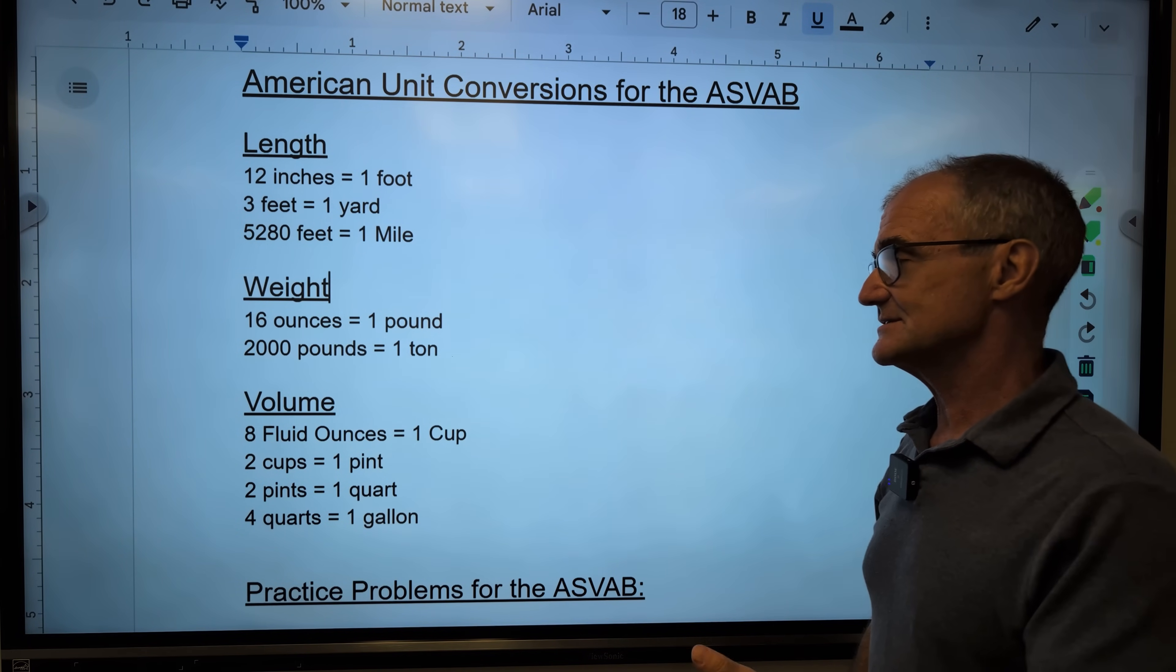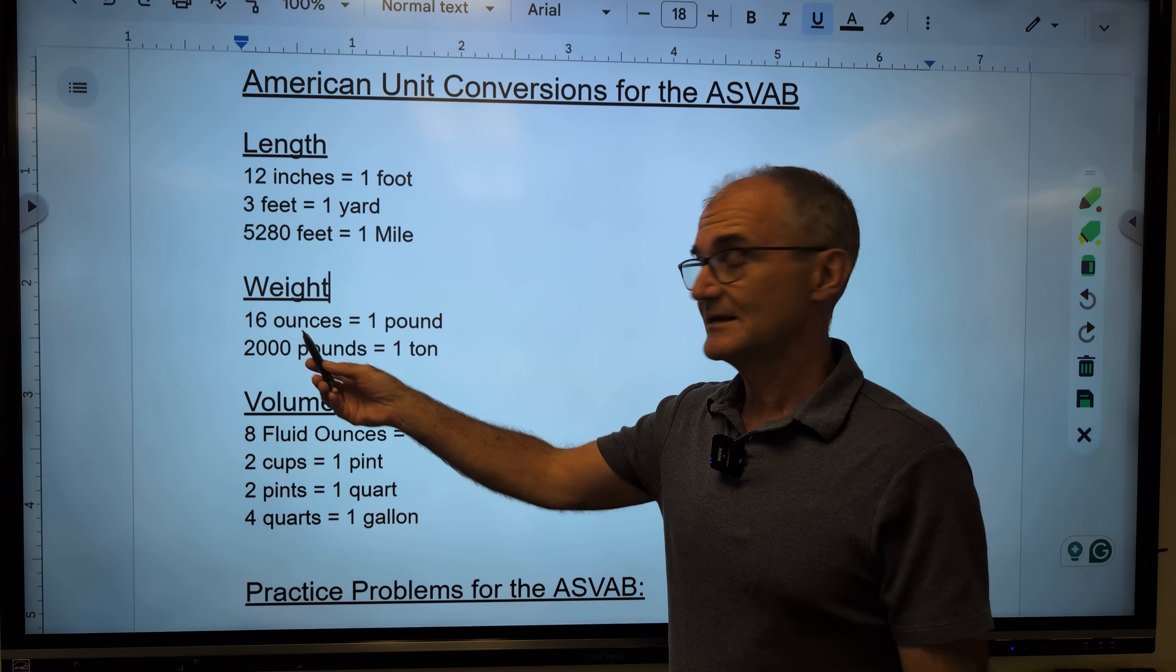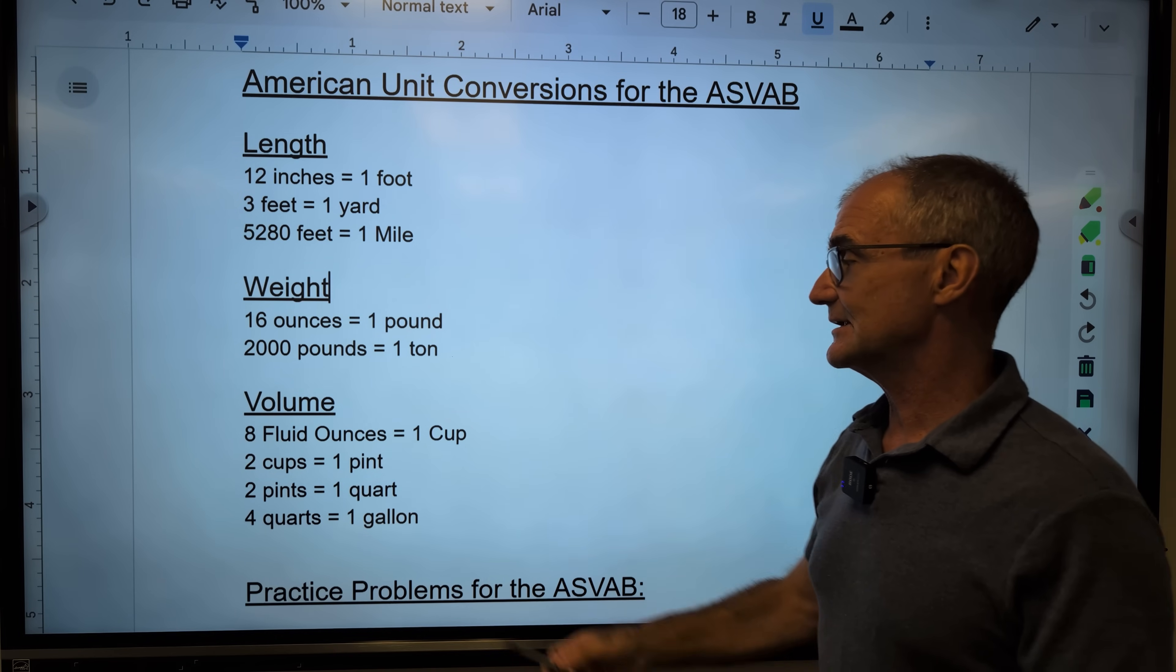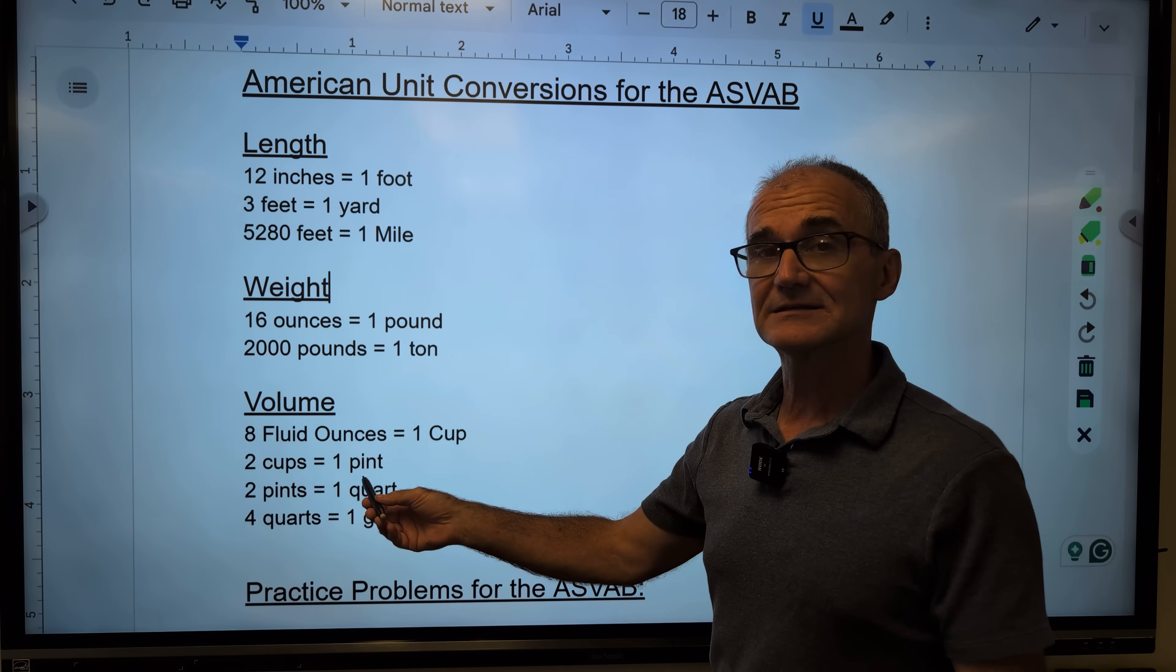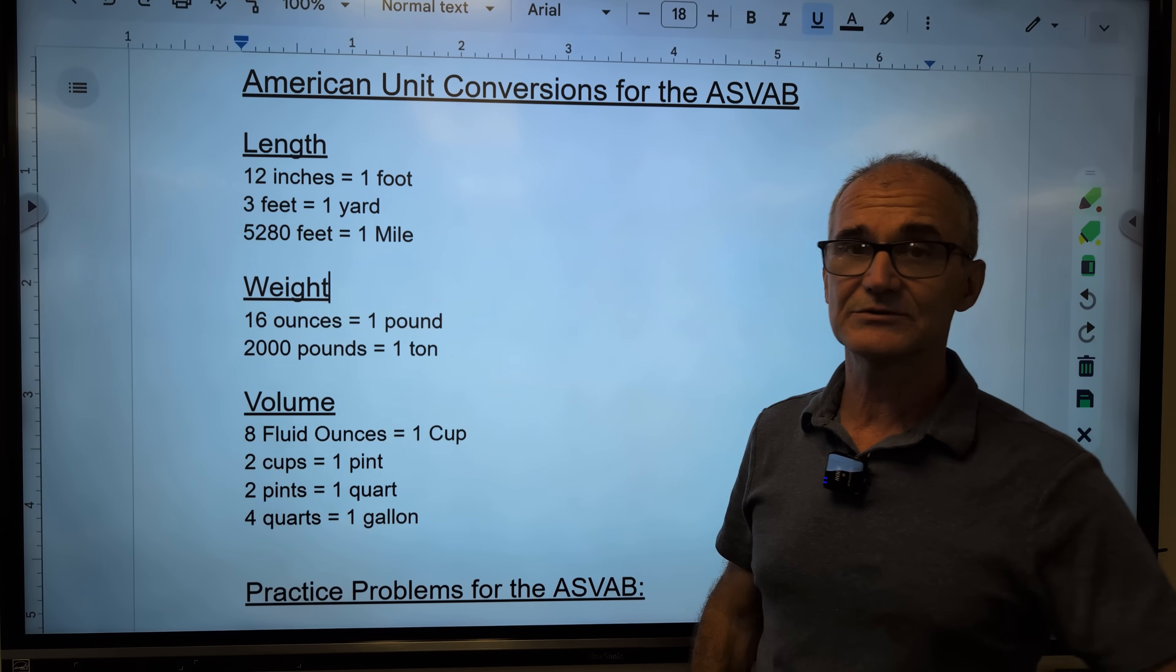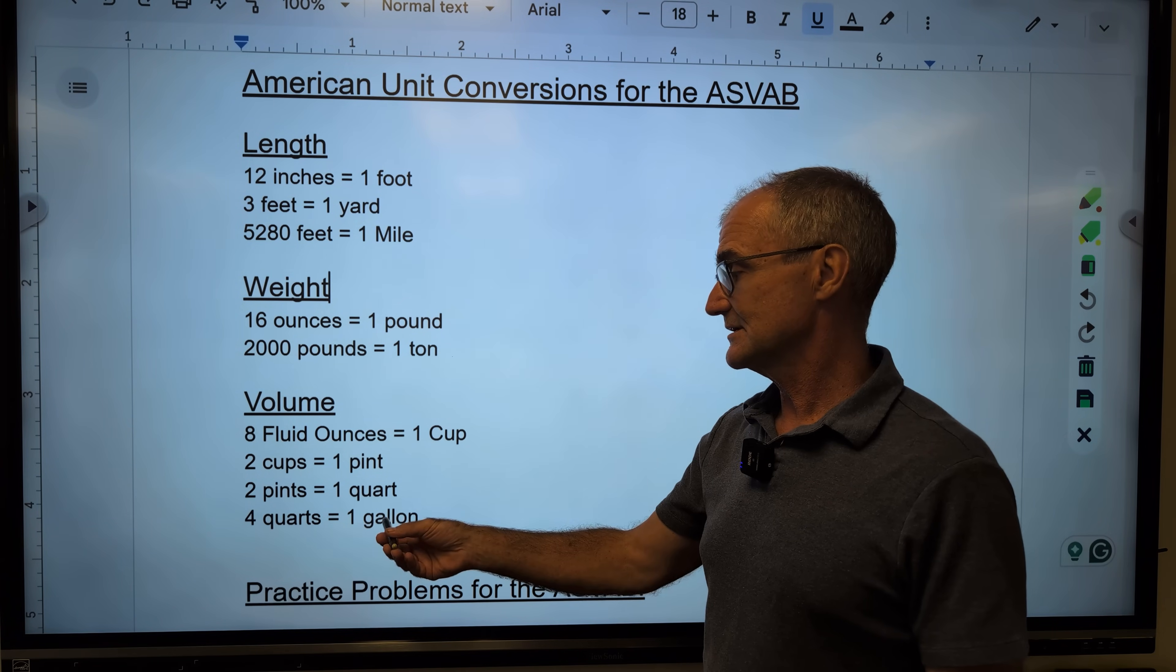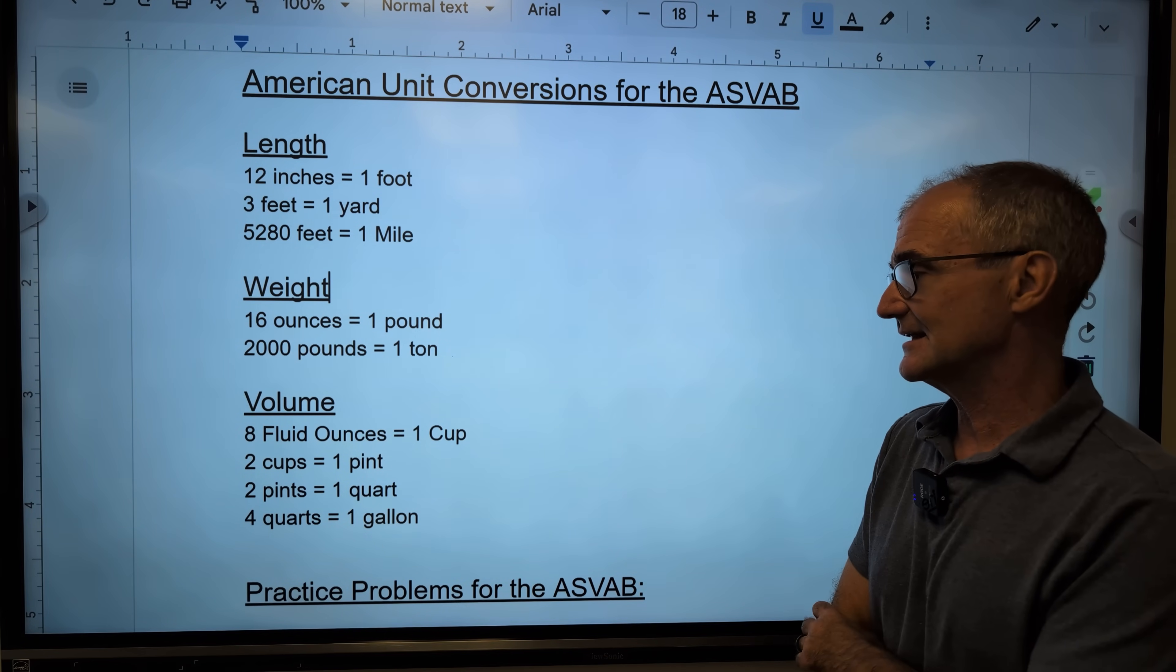And then in volume, this is actually really complex. There are ounces by weight, and then there are fluid ounces as well. So there are eight fluid ounces to a cup. There are two cups to the pint, two pints to the quart. I know this is hard to remember. You just got to do a lot of repeats. And then four quarts to the gallon.